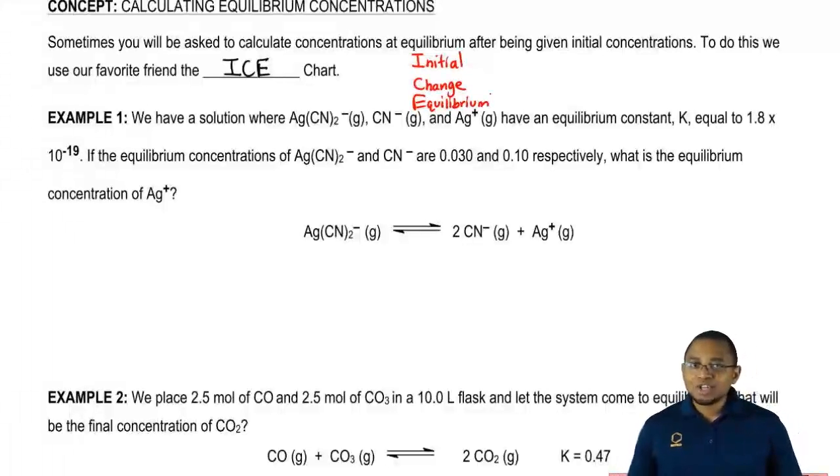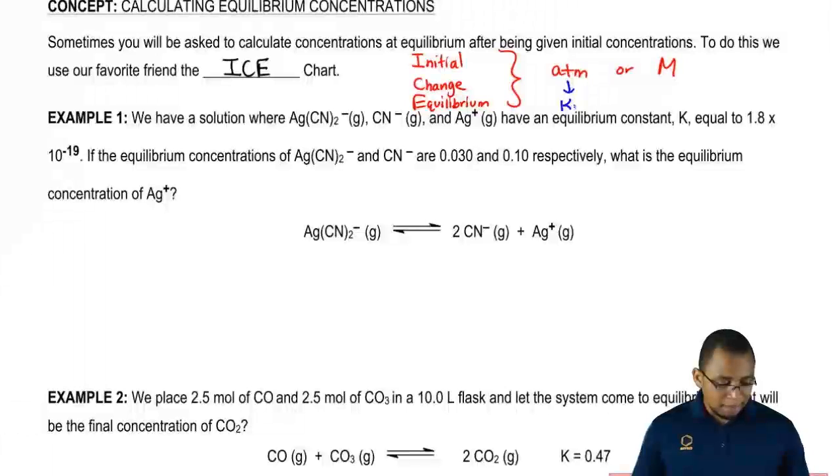We're going to learn how to use an ICE chart and when to use an ICE chart. What we should realize here is that ICE charts are only allowed to have two types of units. They're used to having atmospheres or molarity as the units. And remember, why those two units? Because atmospheres are connected to Kp and molarity is connected to Kc. We're still going to be dealing with our equilibrium constants because they go hand-in-hand with our ICE charts.